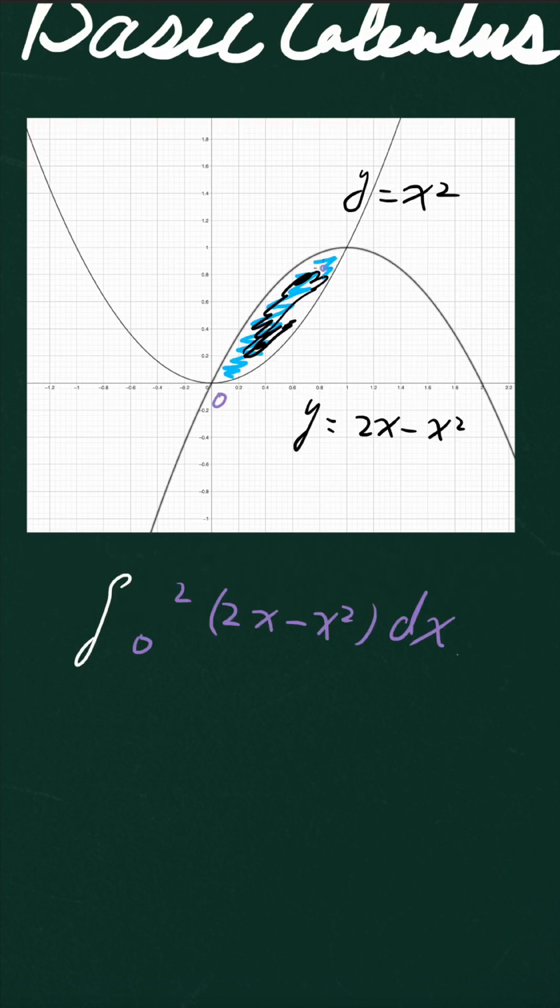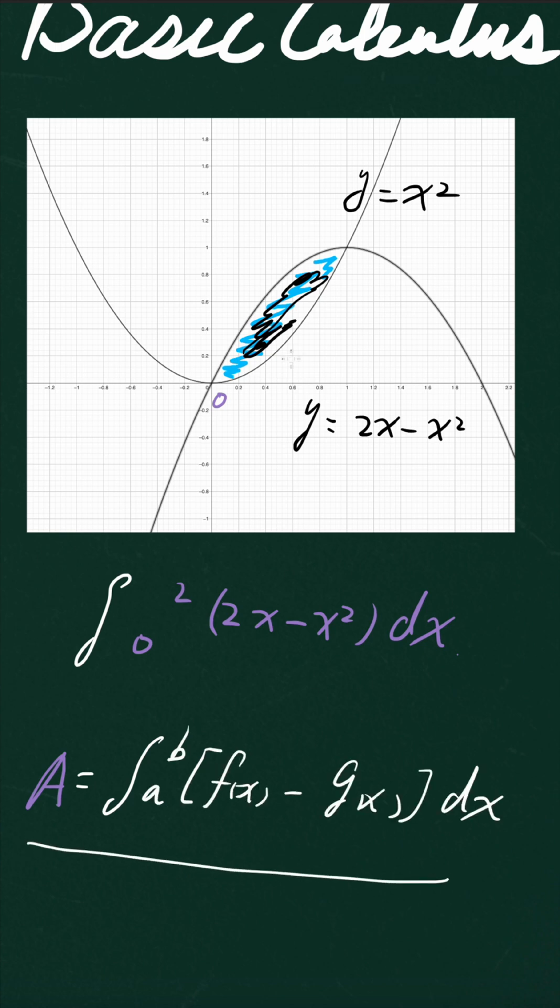Actually, the area between the curve of two functions, we do have a formula. The area A is equal to the integral of the difference of the two functions. So we're going to use this formula to find the area.